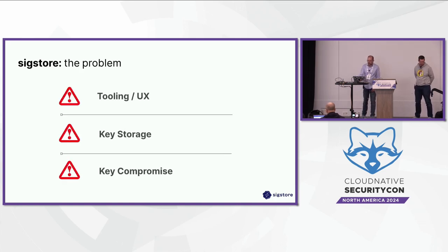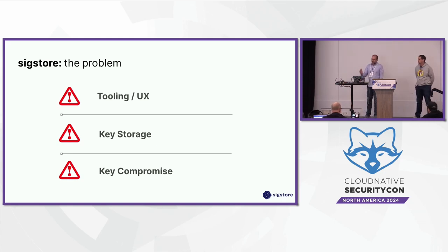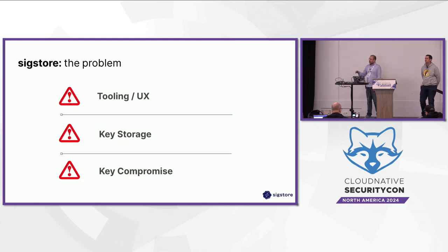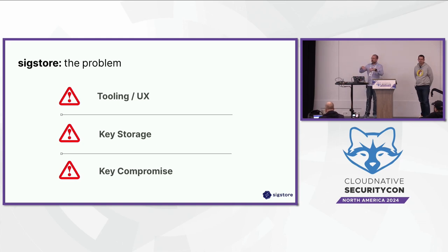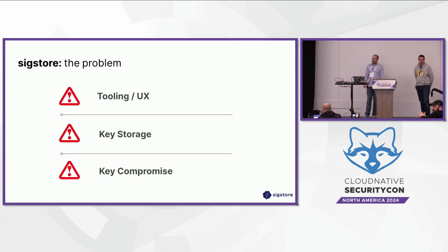So what was the problem we were seeking to solve? Pre-Sigstore, signing adoption was very poor in open source packaging systems and in general. Most who had adopted something, usage was around 0.something percent — very, very low. We believed a lot of this was to do with the user experience. The tooling was quite cumbersome and challenging to use, especially in modern idiomatic approaches: headless machines, automation, all the typical approaches we have in the SDLC now. We realized the tooling was cumbersome and problematic around adoption.